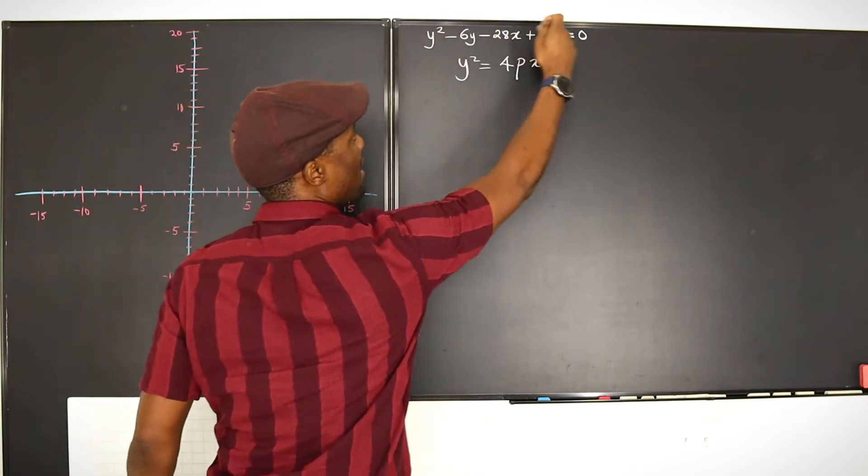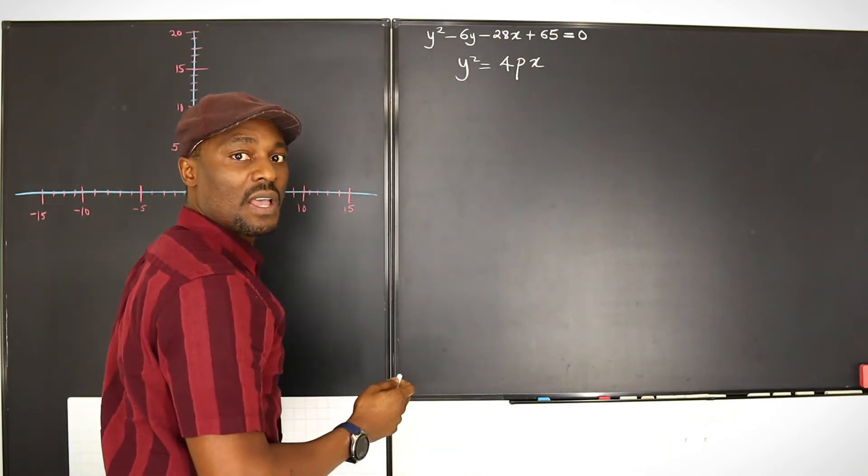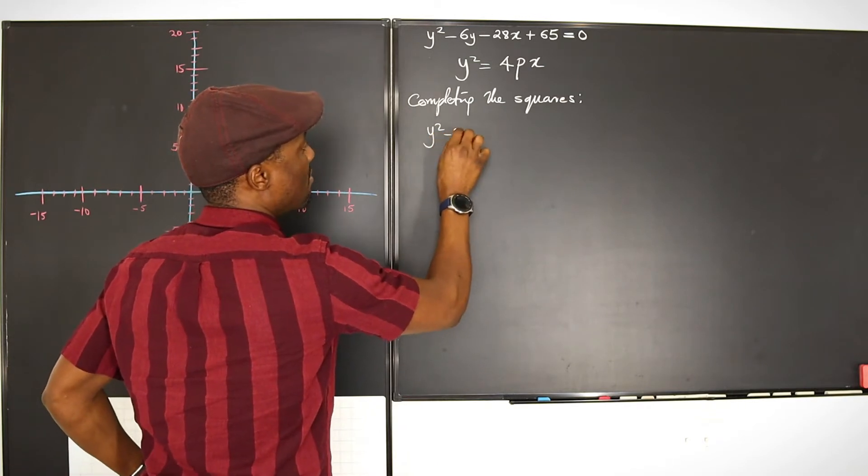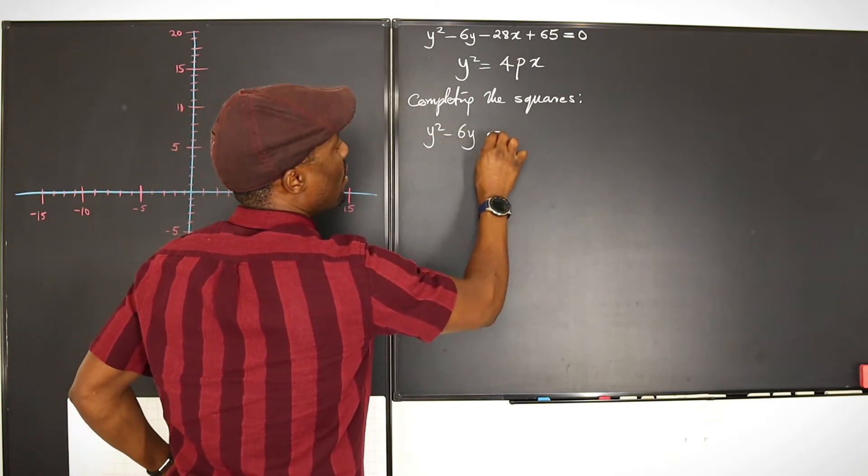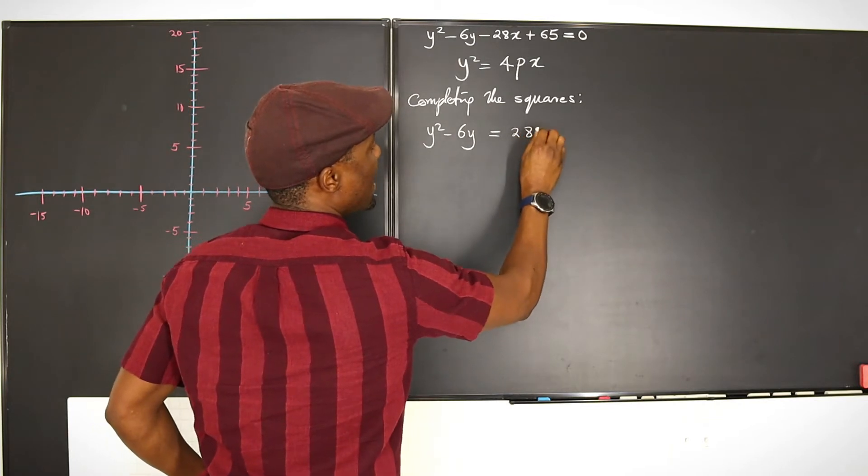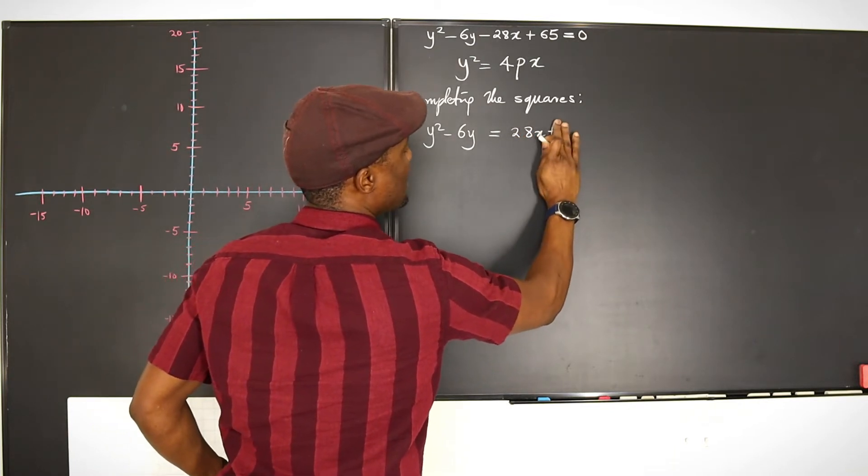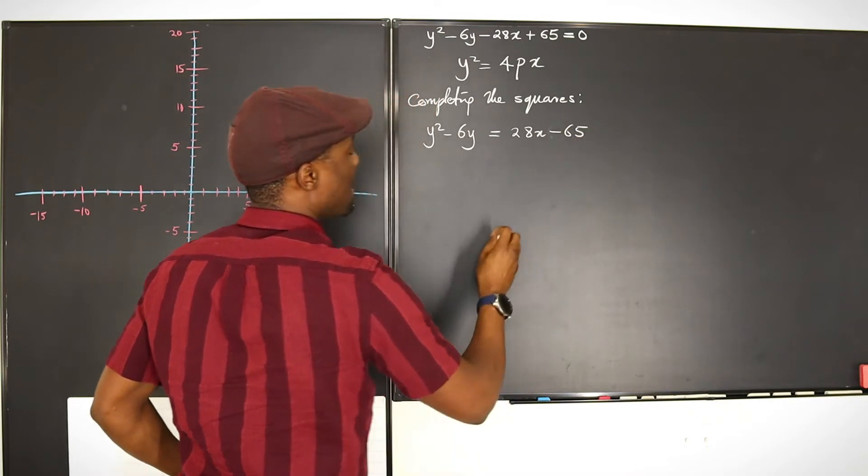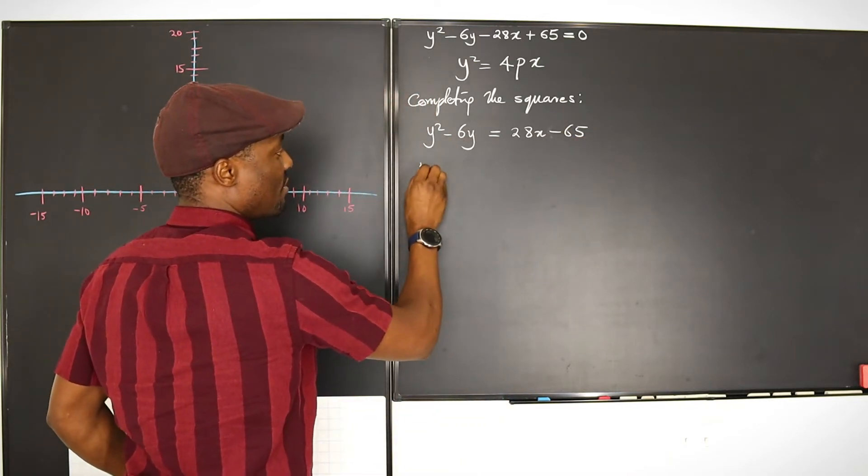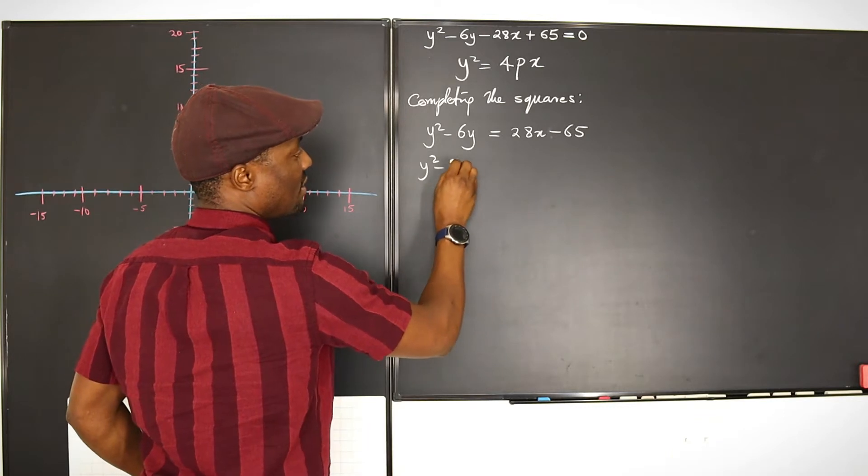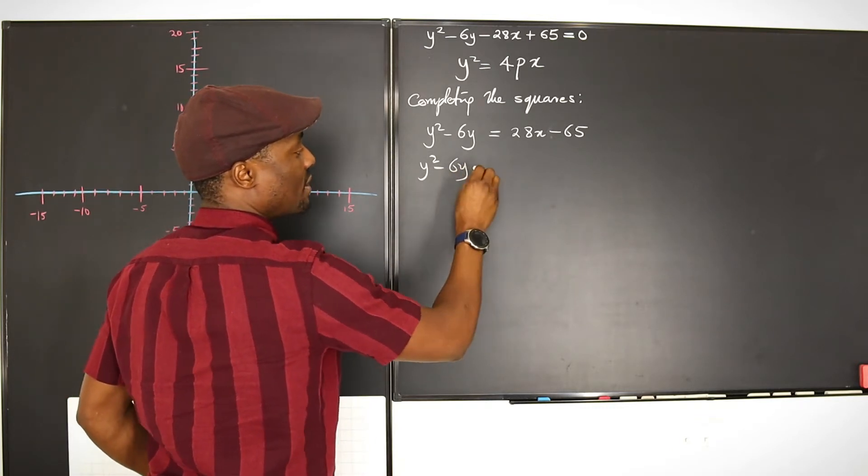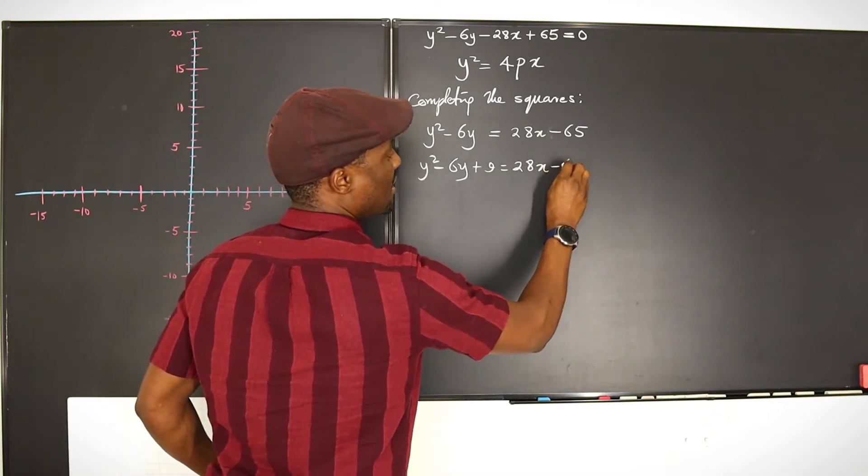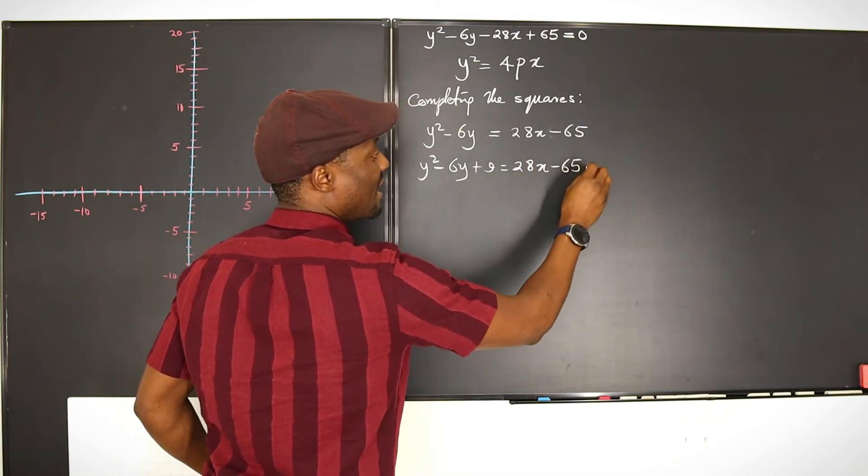Just put the one that has a square on this side and leave the other one on this side with the 4p multiplying it. So let's transform this expression to look like this by completing the squares. And that means y squared minus 6y, we're going to move this to the other side, will be 28x minus 65. Now to complete these squares, it's going to be y squared minus 6y. Half of negative 6 squared is going to be plus 9 equals 28x minus 65. We have to add that 9 back.